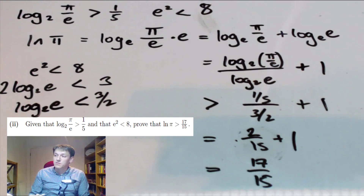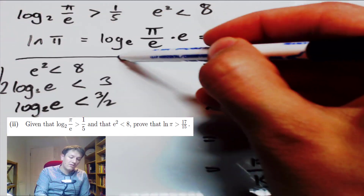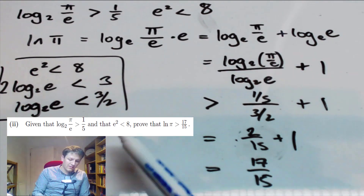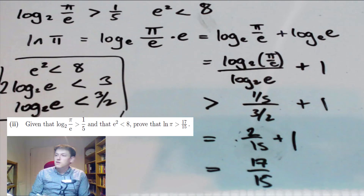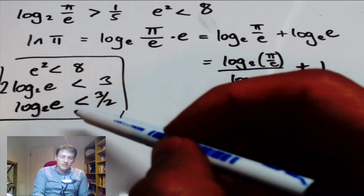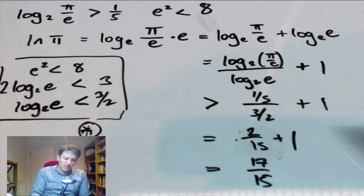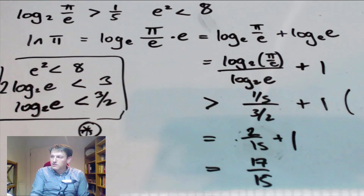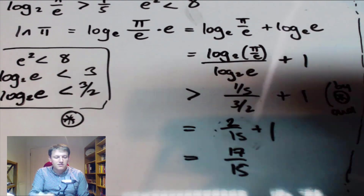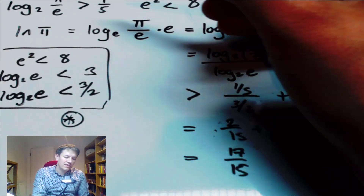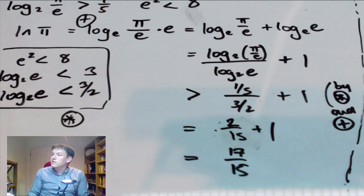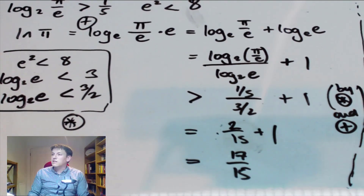You can do these arguments quite efficiently if you keep your wits about you — there's not actually a lot written down. It's a good idea to label intermediate results with a star or plus symbol so that when you reference them later it's clear what you're doing.